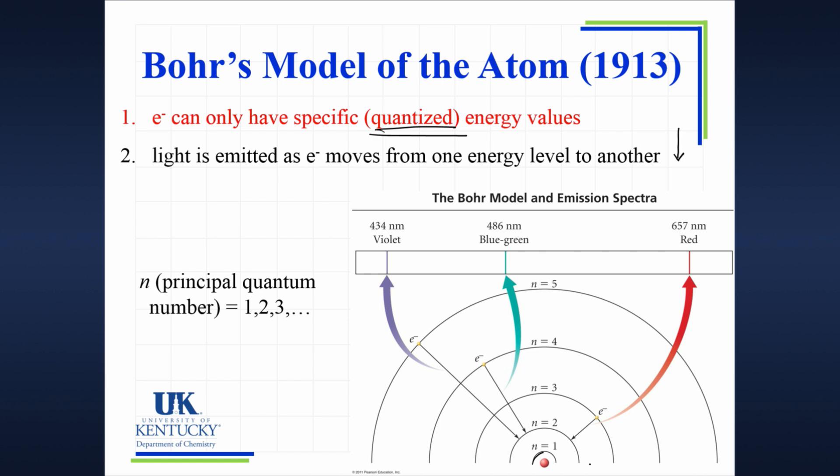He called this one n equals 1, n equal 2, n equal 3, n equal 4. So now why do we see certain wavelengths?